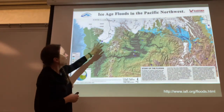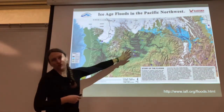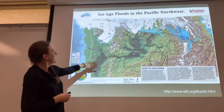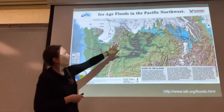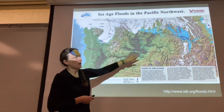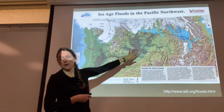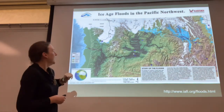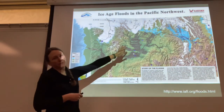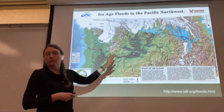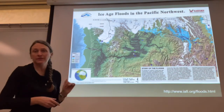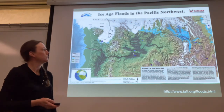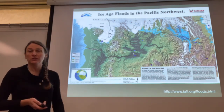In doing so, it created really crazy features — things like a lot of the scour lakes and meromictic lakes on the east side, but also created massive rivers on a scale that are pretty much unimaginable. So some really cool history there.